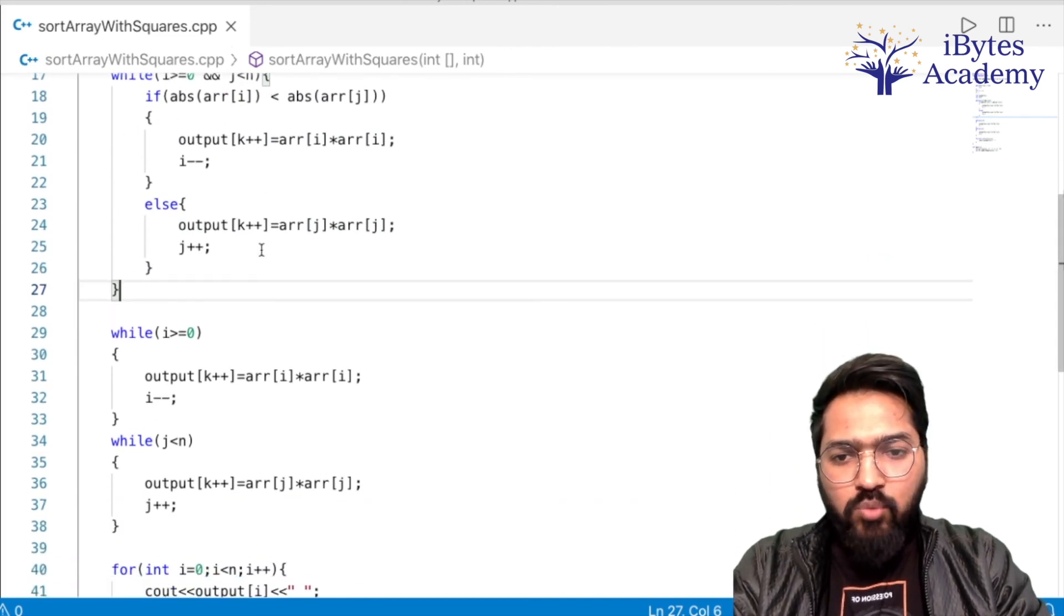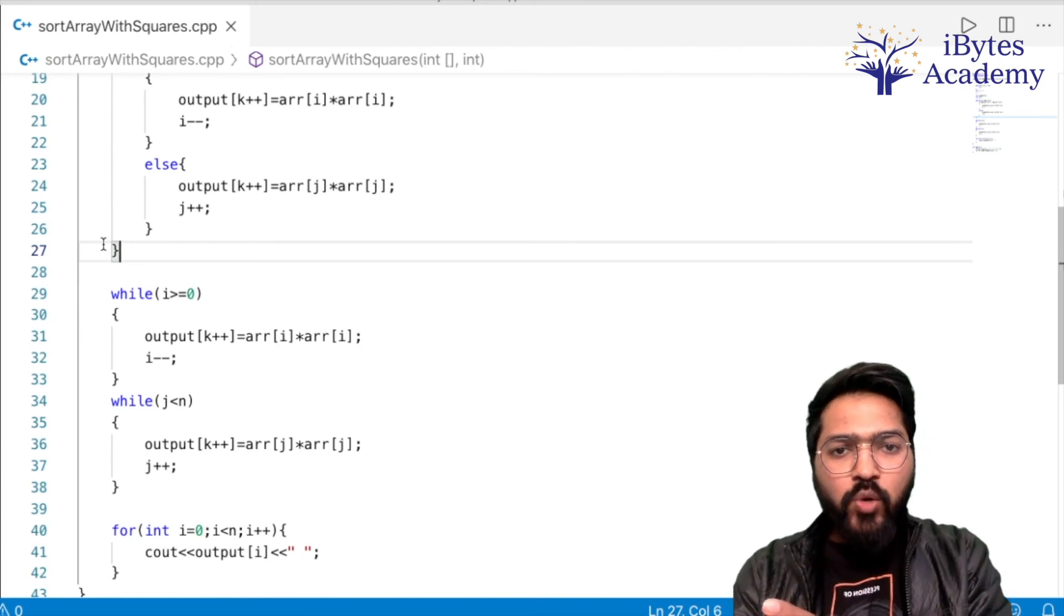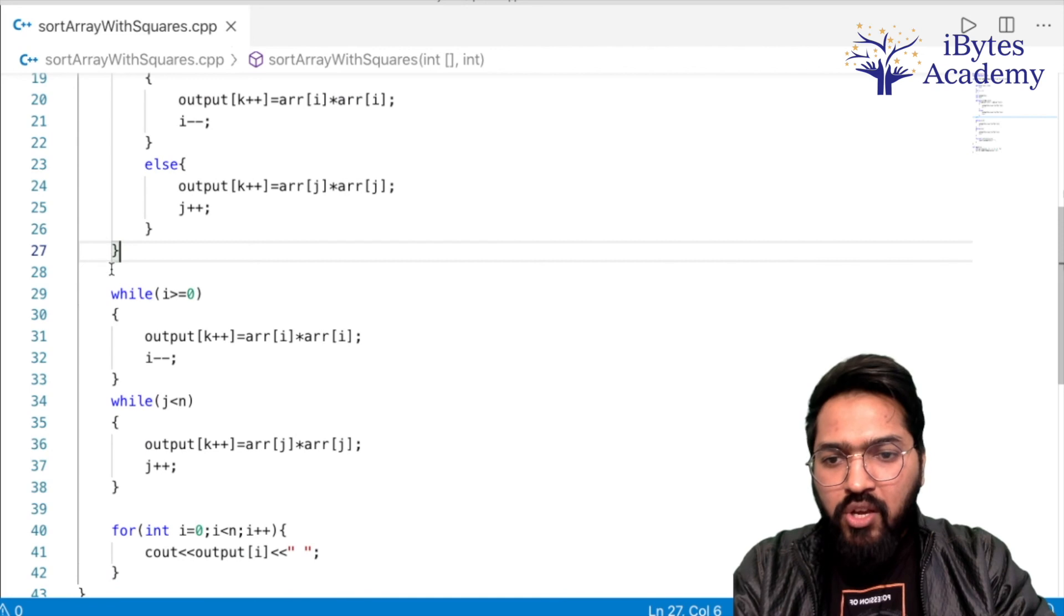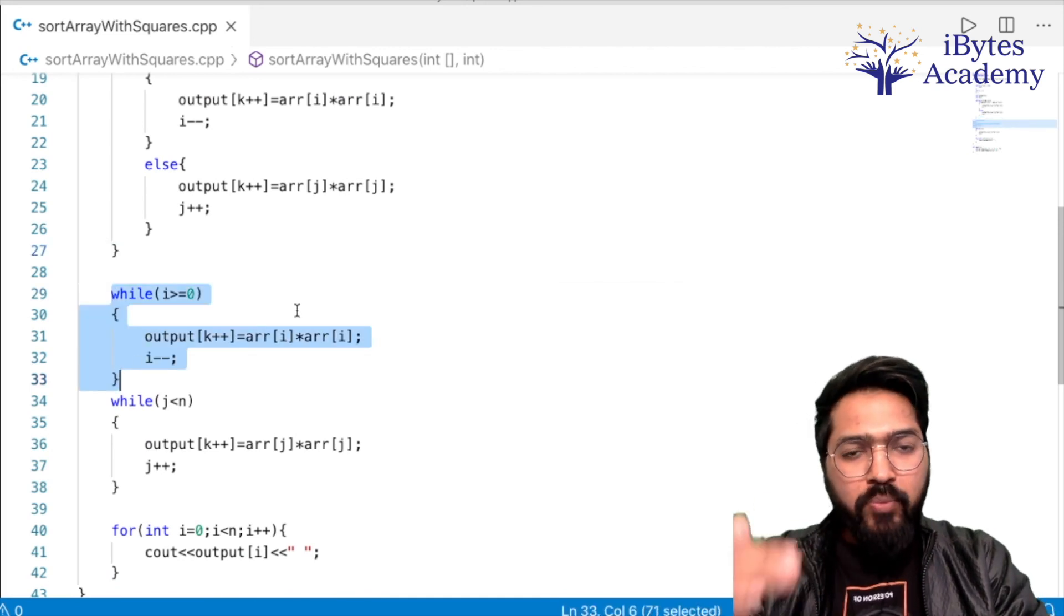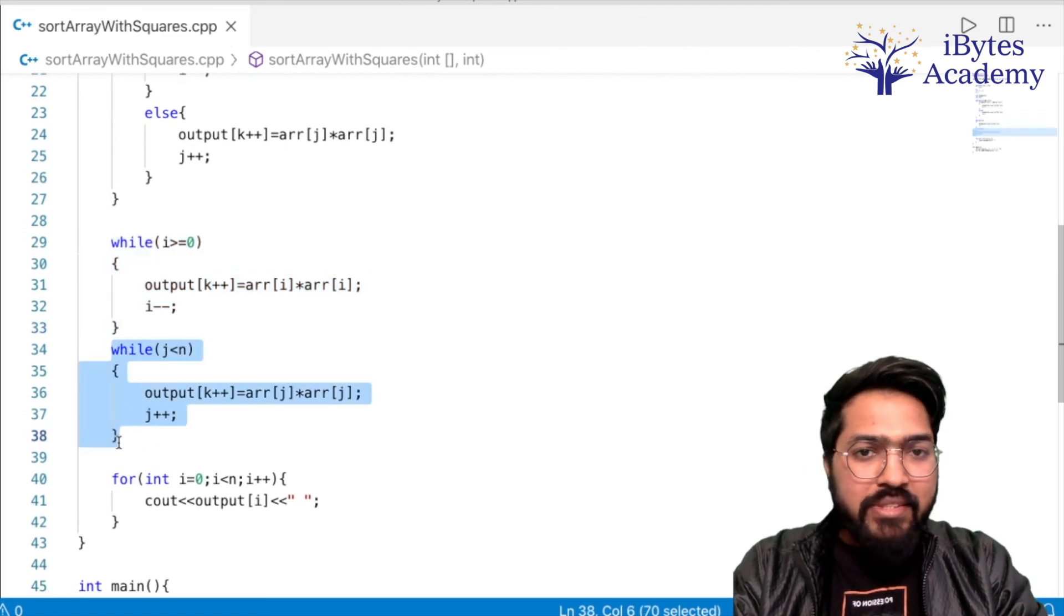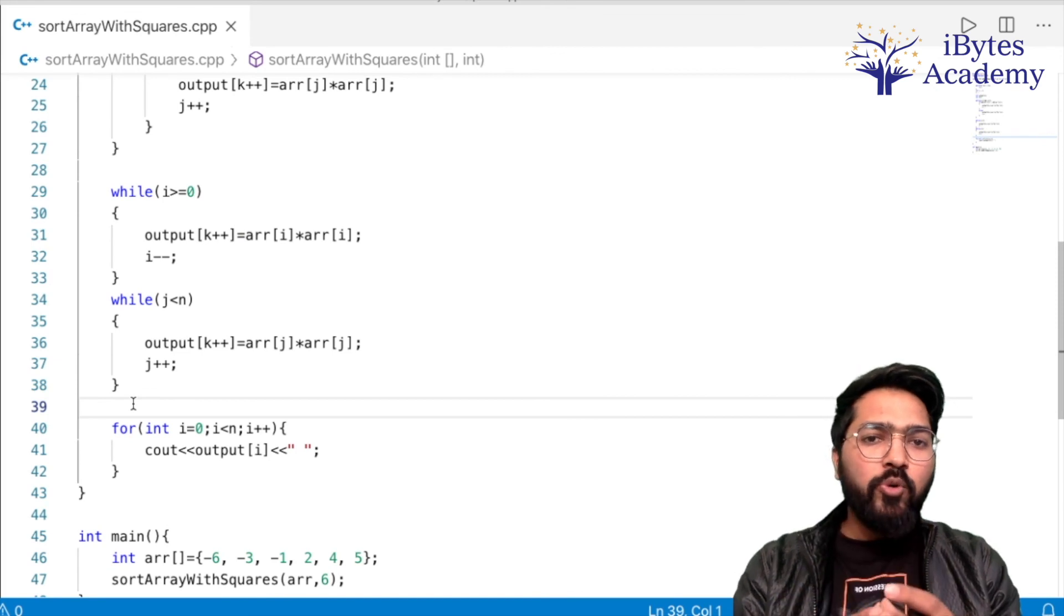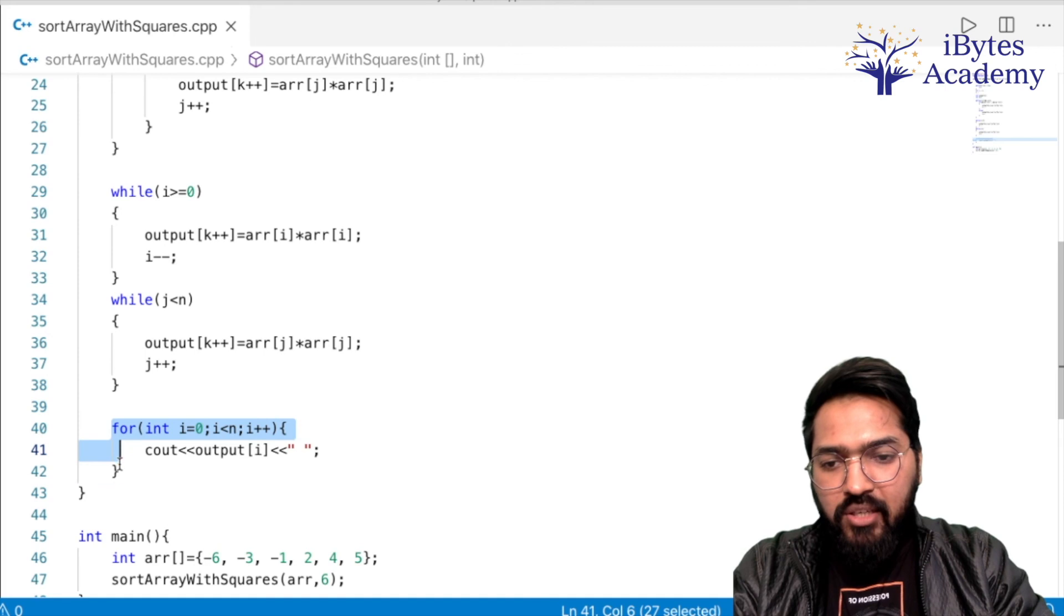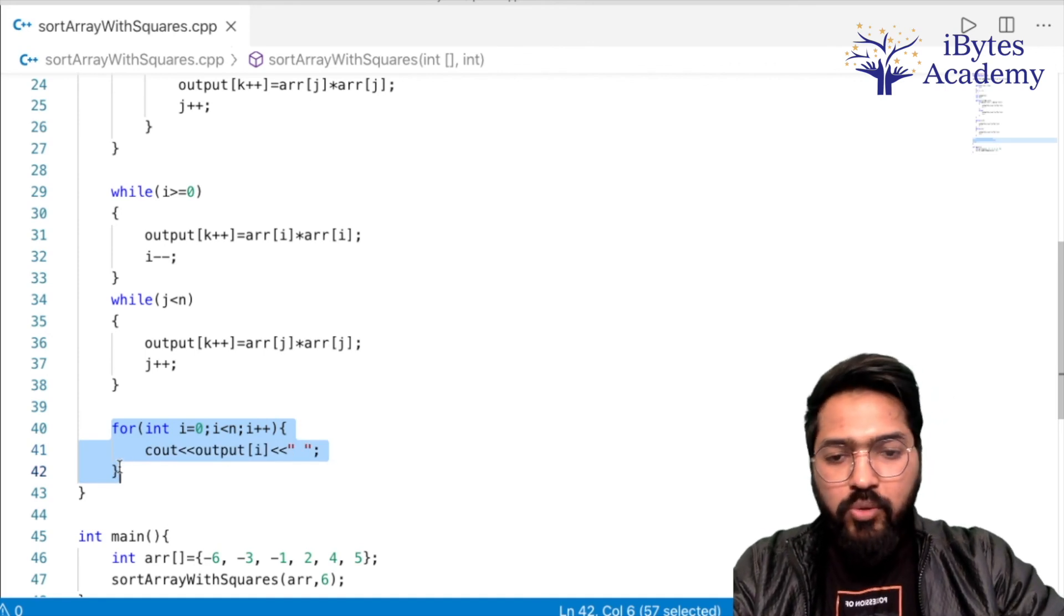Ab jab yeh wala while loop khatam ho jaega uske baad ab ho sakta hai ki jo i hai uske elements poore na hue ho ya phir j ke elements poore nahi honge, ek baaki reh jaega. To agar i ke poore nahi hue hain - ki humne wo saare elements print kar di hain. Chalo ek bar chala ke dekh lete hain.